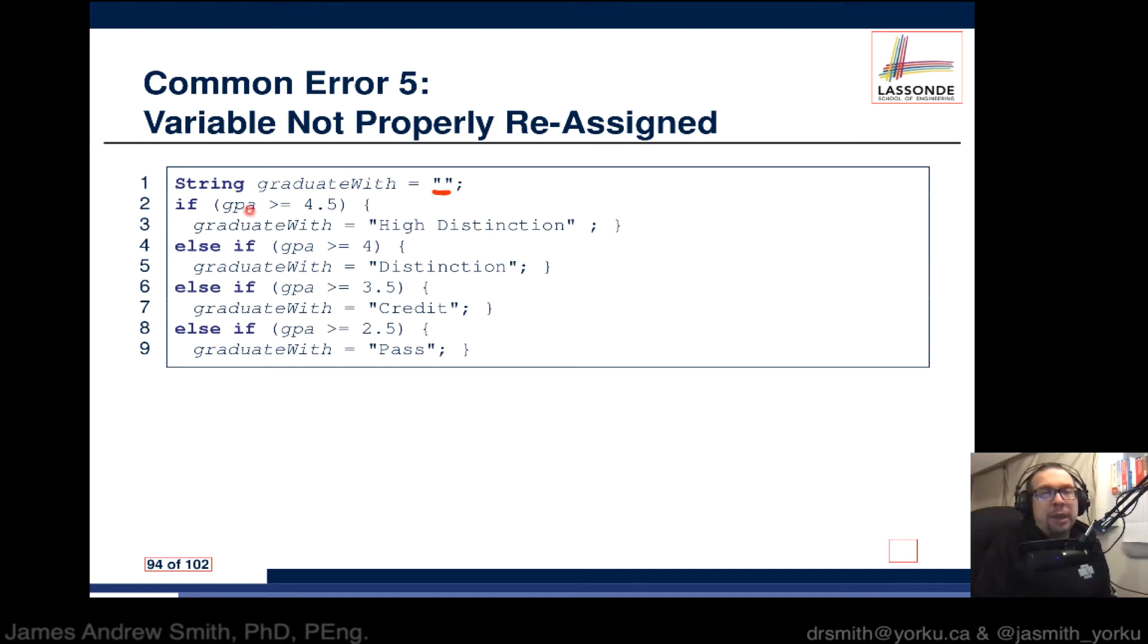You can see that we've properly begun and ended each portion of the if because having these curly braces is really important. It means that this is one block, that's another block right there, that's another one, and that one is another block. You've got four different branches in your if.